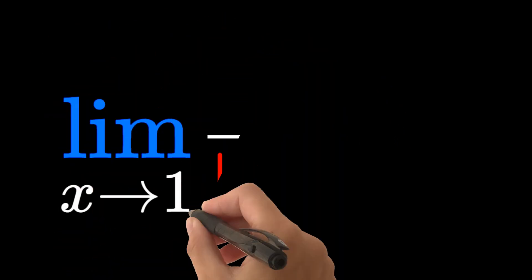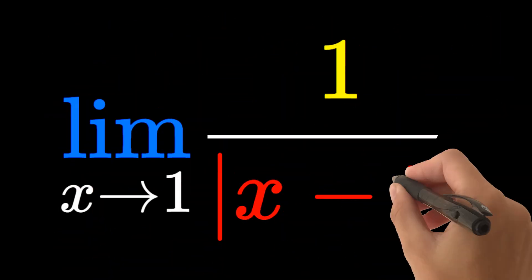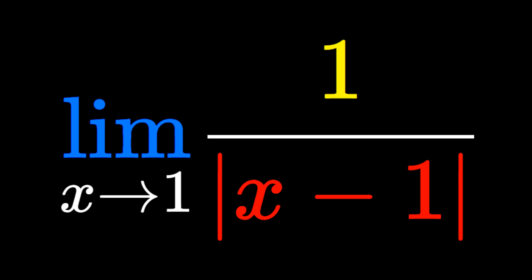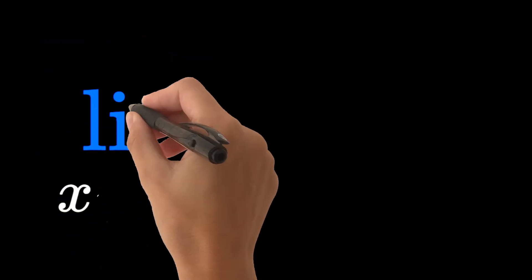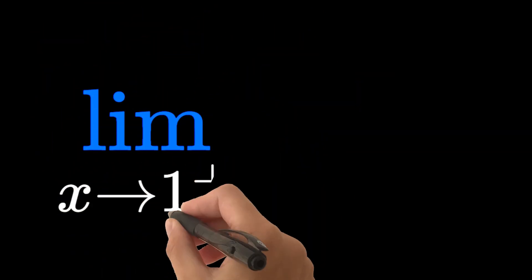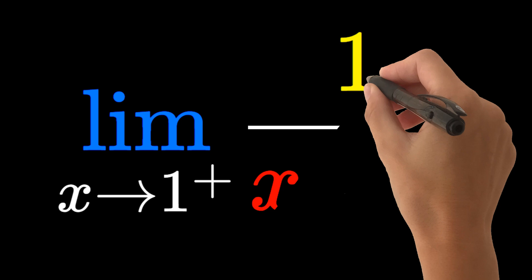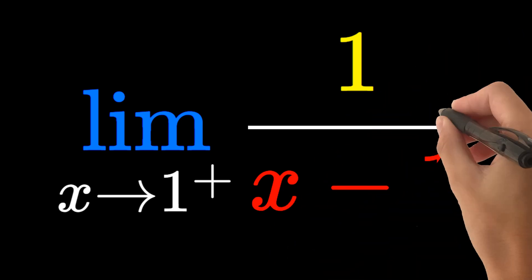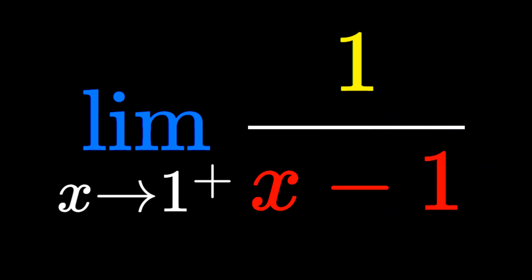Let's find the limit as x goes to 1 of 1 over |x - 1|. When x is greater than 1, we can drop the absolute values and write the limit as x goes to 1 from the right side of 1/(x - 1). There are no more absolute value bars.